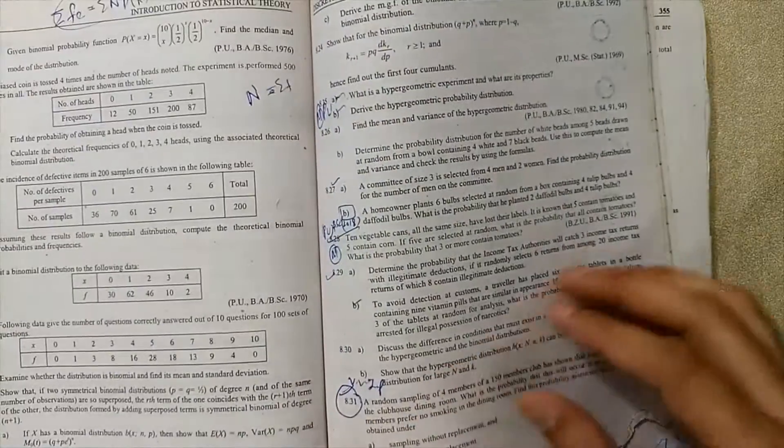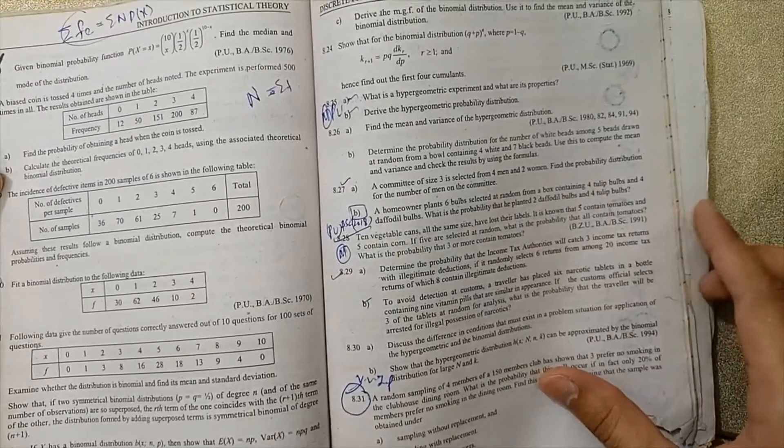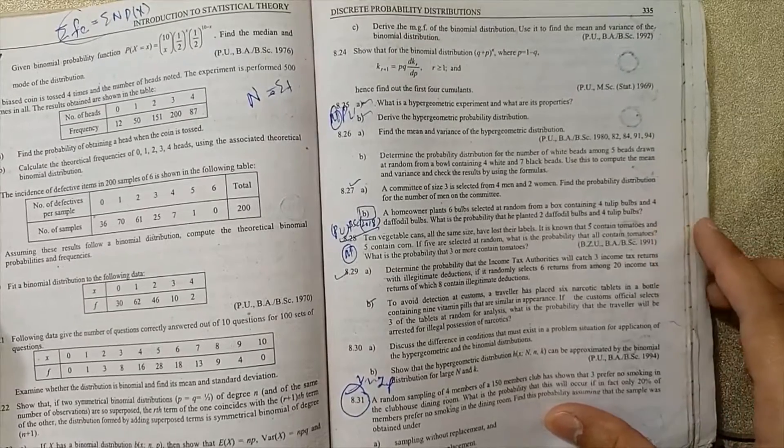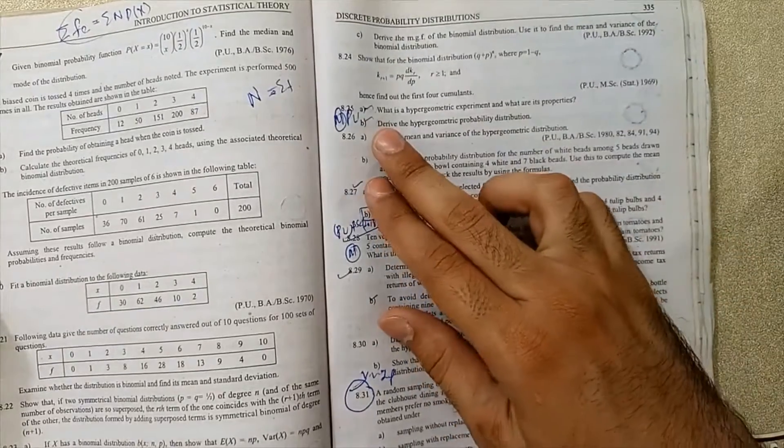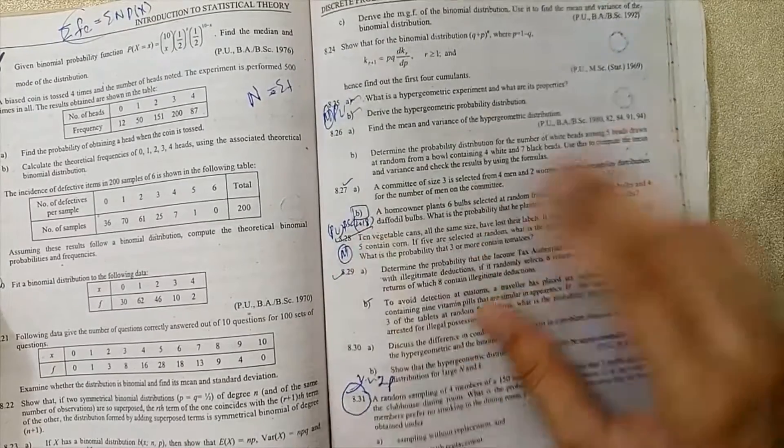These are very important questions. The B part is very important. 8.3, 8.20, 8.25.